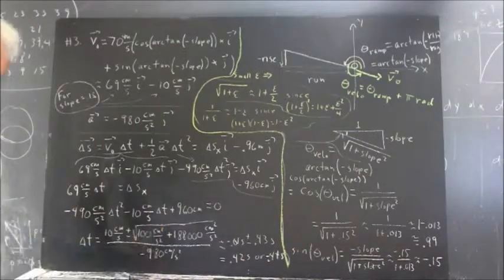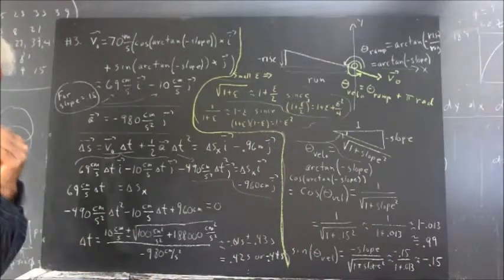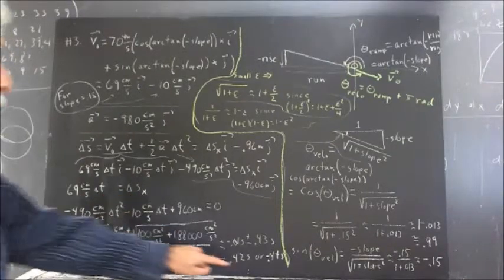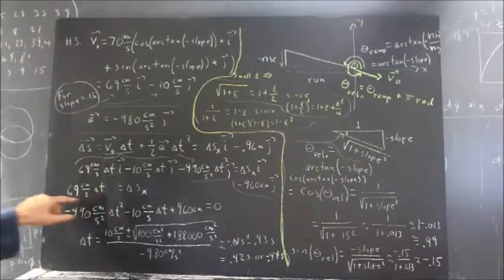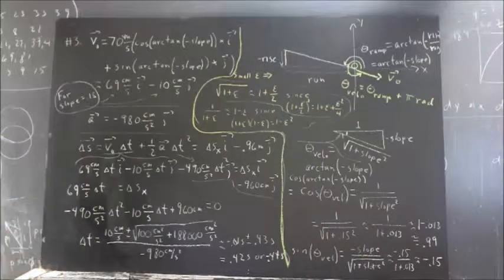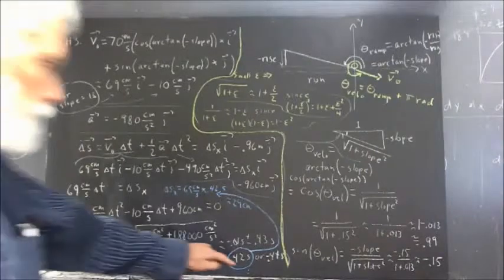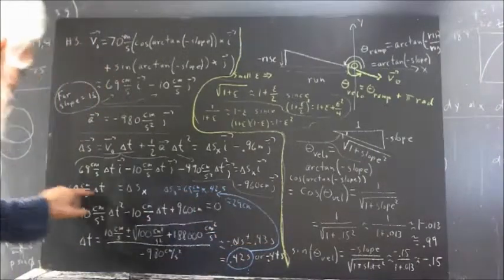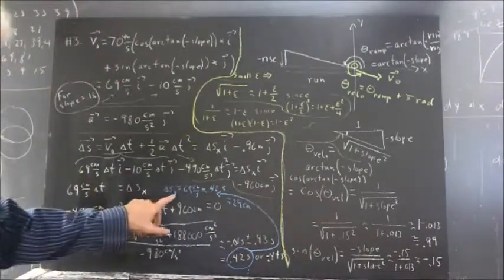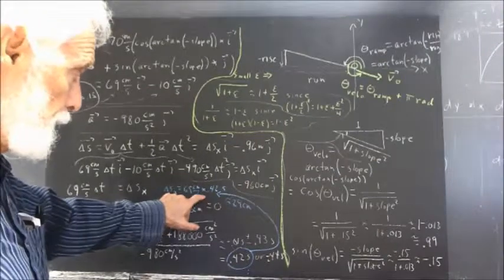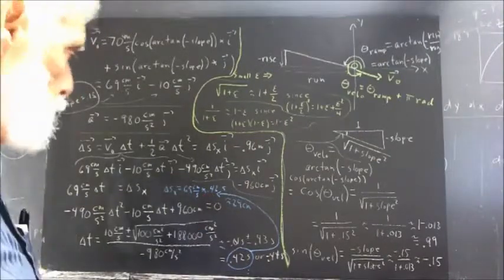Now, I haven't completed the problem, but you know what to do from here. You still have to solve for delta Sx. But now you've got your delta T. Multiply that by your 69 centimeters per second. And I'll just write that in there. I'm going to do that off camera. So, we can take this 0.42 seconds, plug it in up here for delta T. We get delta Sx of 69 centimeters per second times 0.42 seconds.